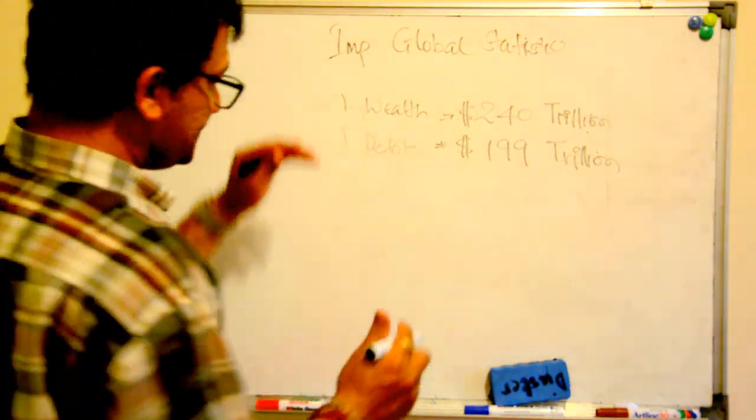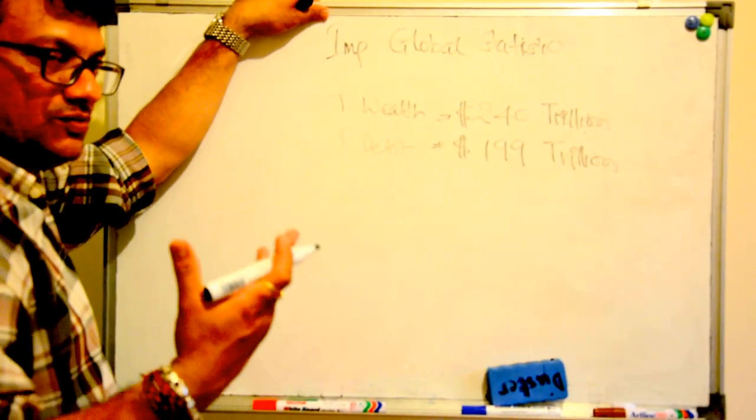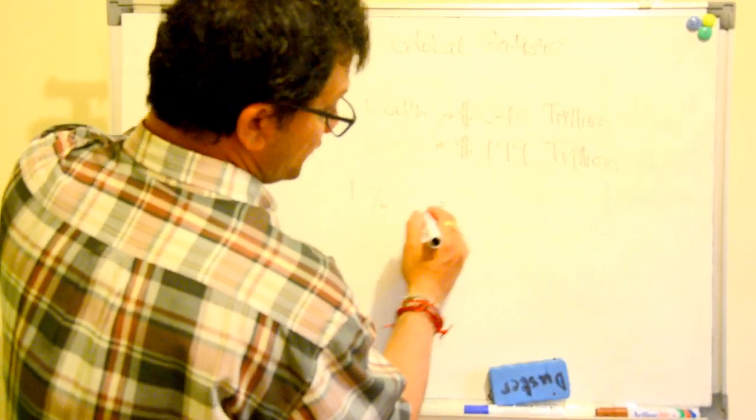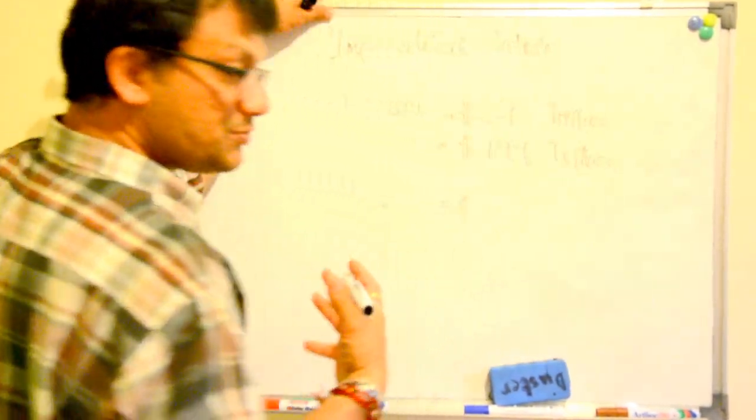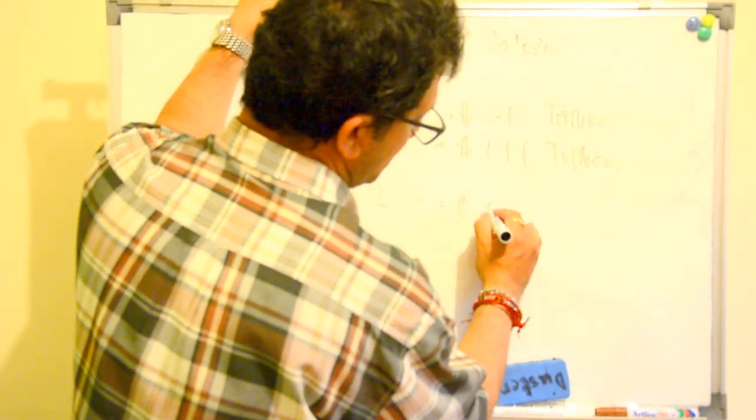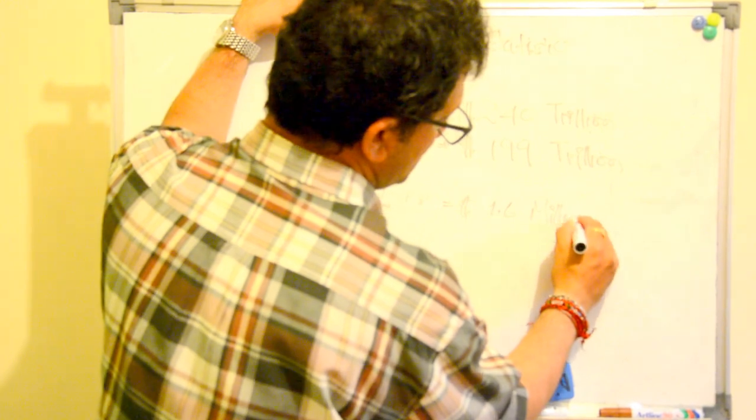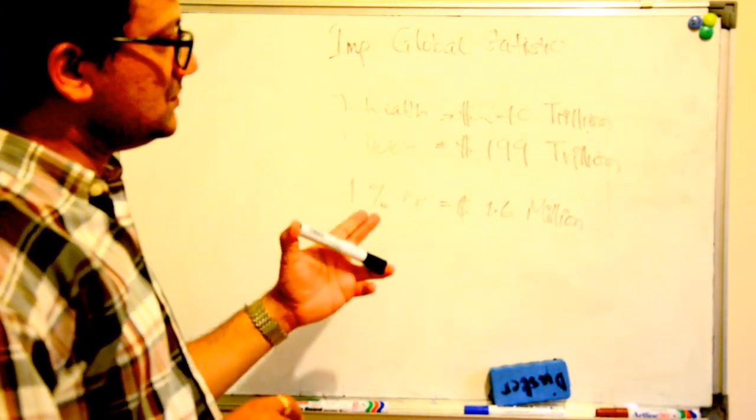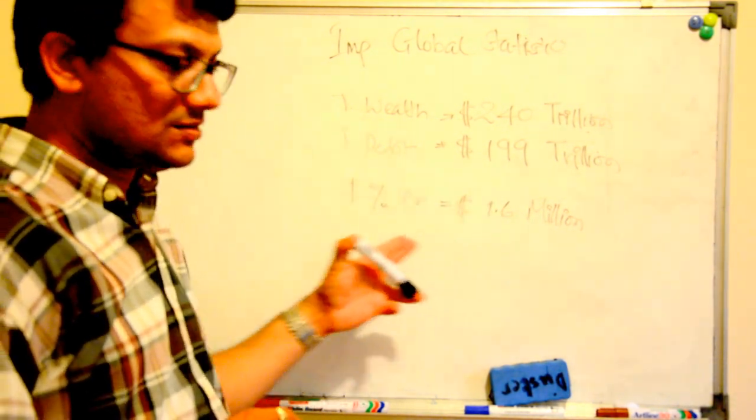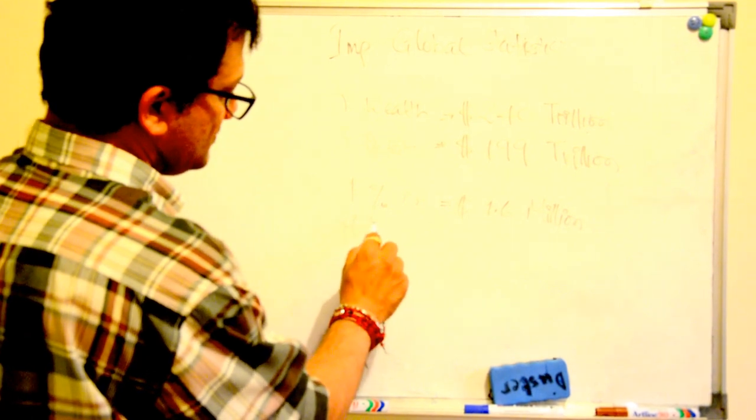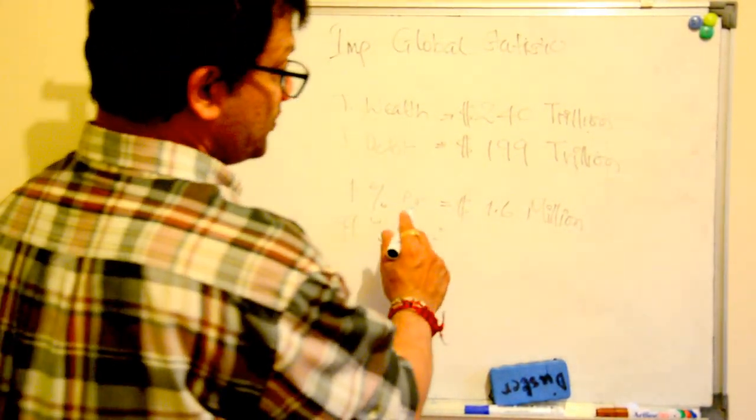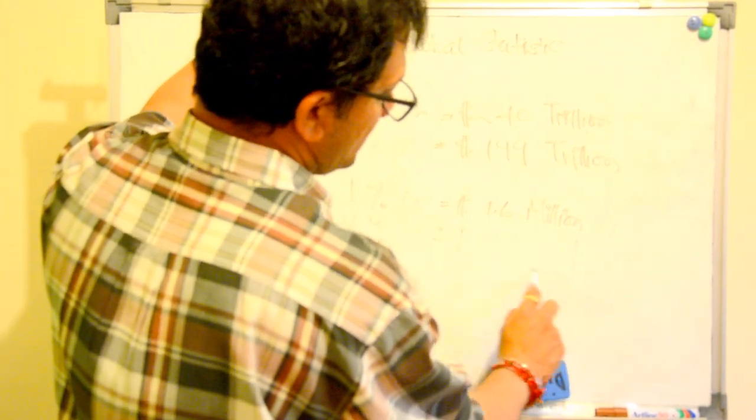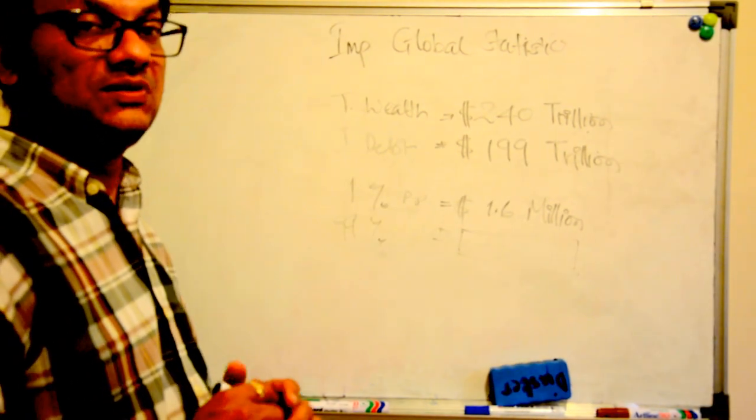One more number: the top 1% of people who own assets, the per person wealth is roughly about 1.6 million US dollars. Now, those 99% are having a very meager, a very small, a very negligible asset base.